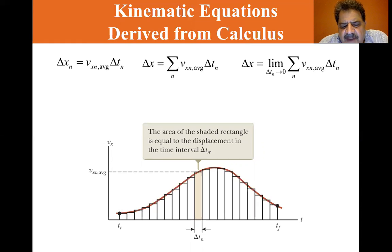Delta x equals the limit as delta t_n approaches zero of the sum of Vx_n average times delta t_n.